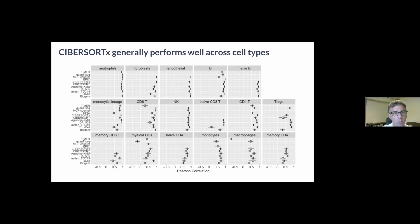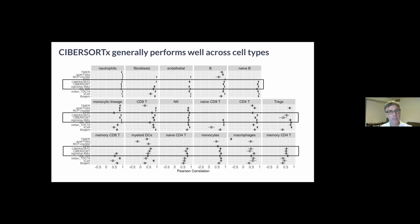Nevertheless we can look at its performance on the individual cell types that it did predict. Here I'm showing the baseline comparator methods and the top participant methods as rows with the Pearson correlation on the x-axis for the indicated cell type. Notice that the cell types are ordered from those with highest mean correlation across all methods in the top left, that's neutrophils, to those with worst mean correlation on the bottom right.